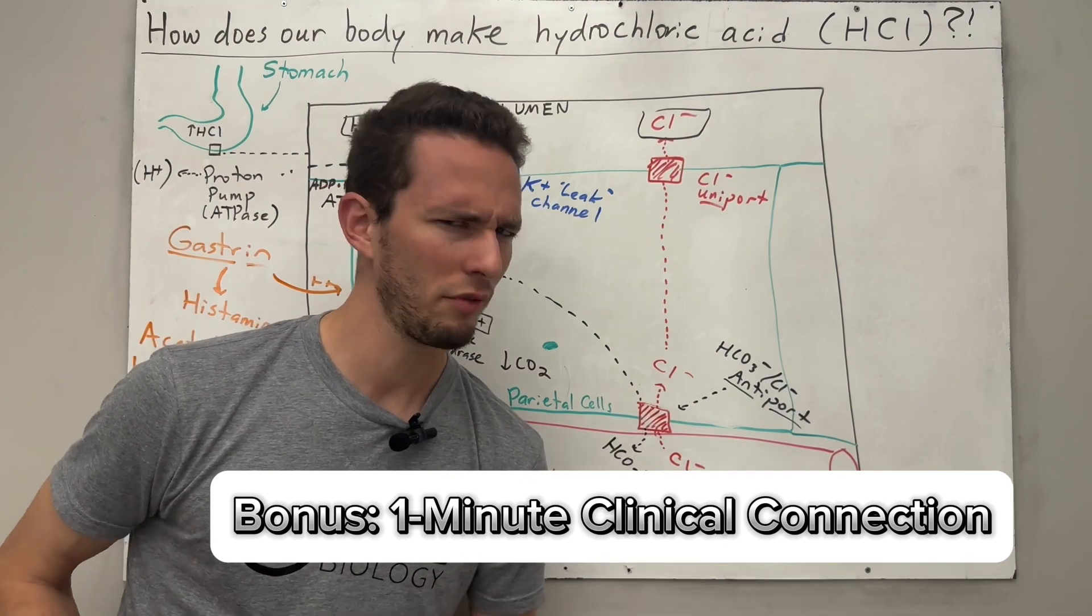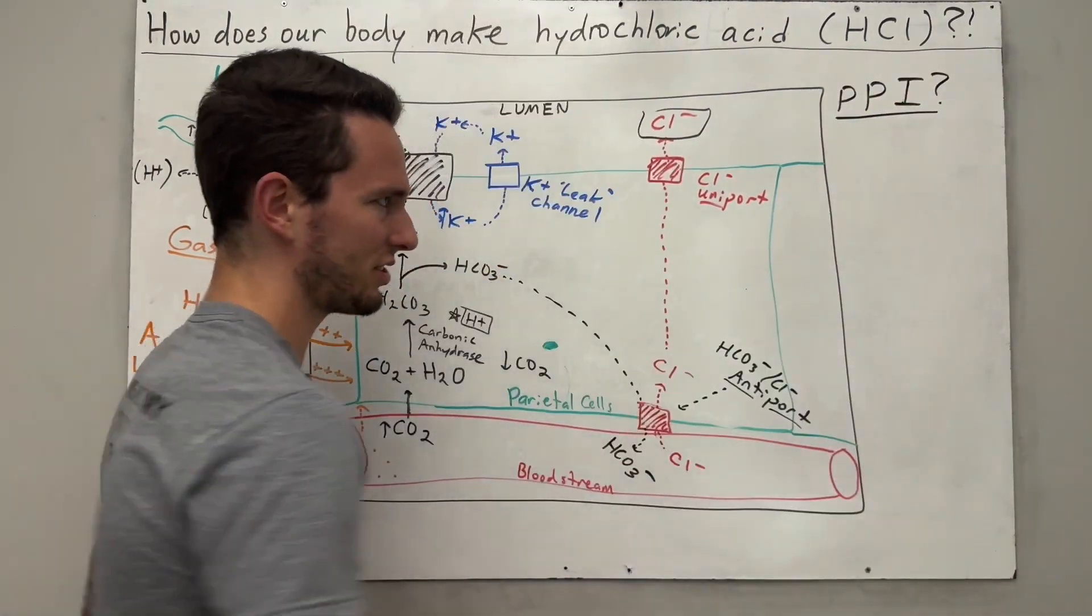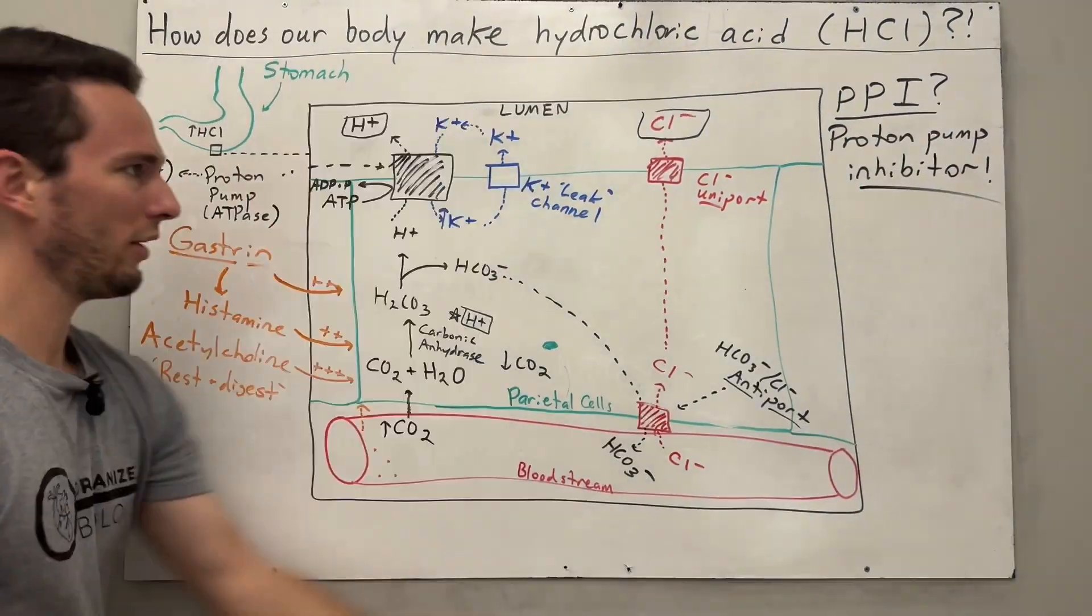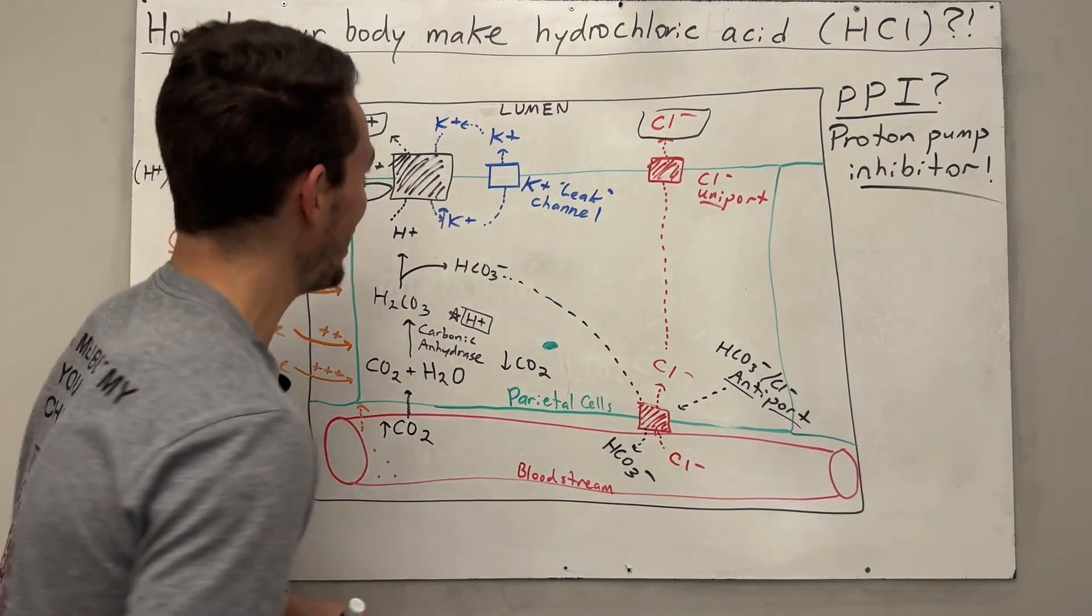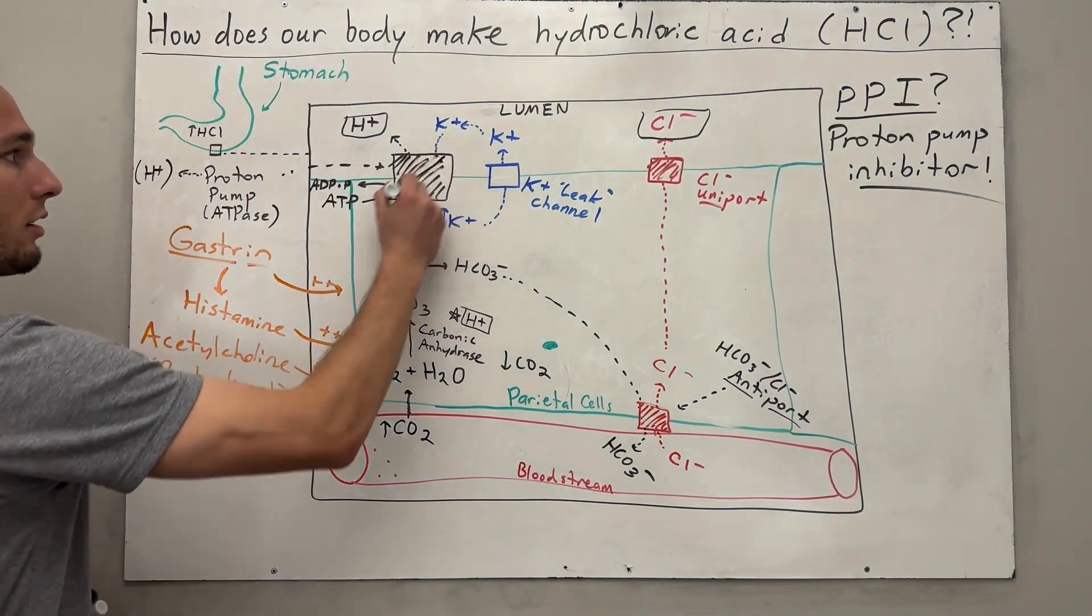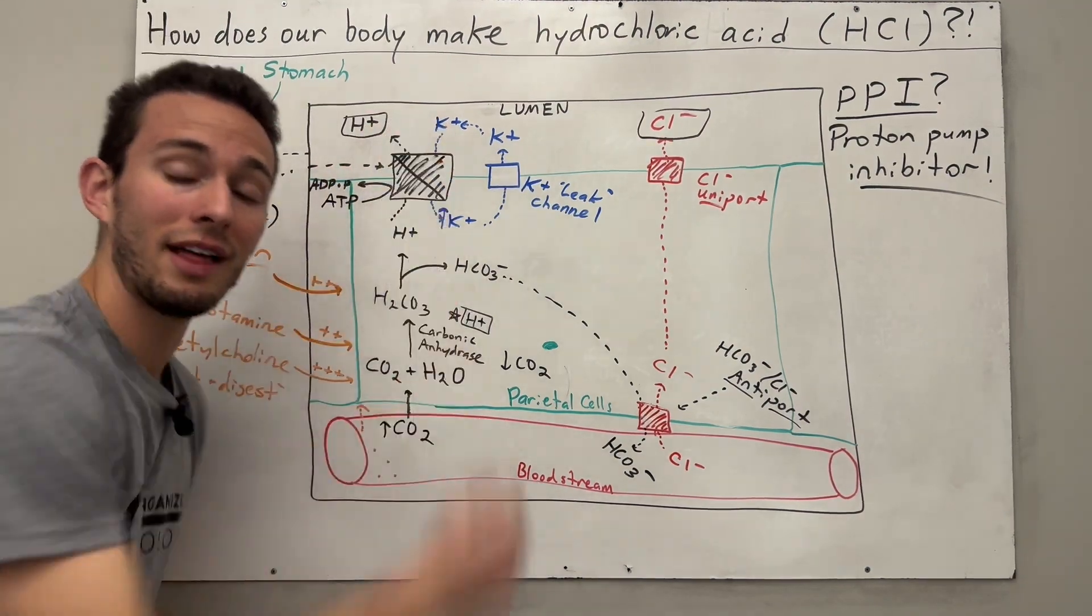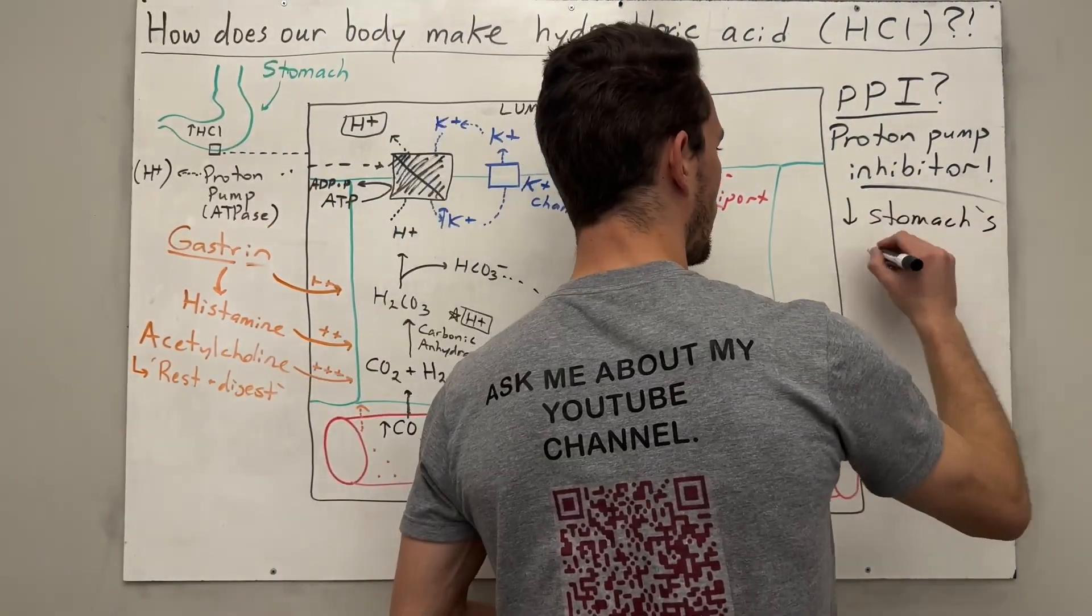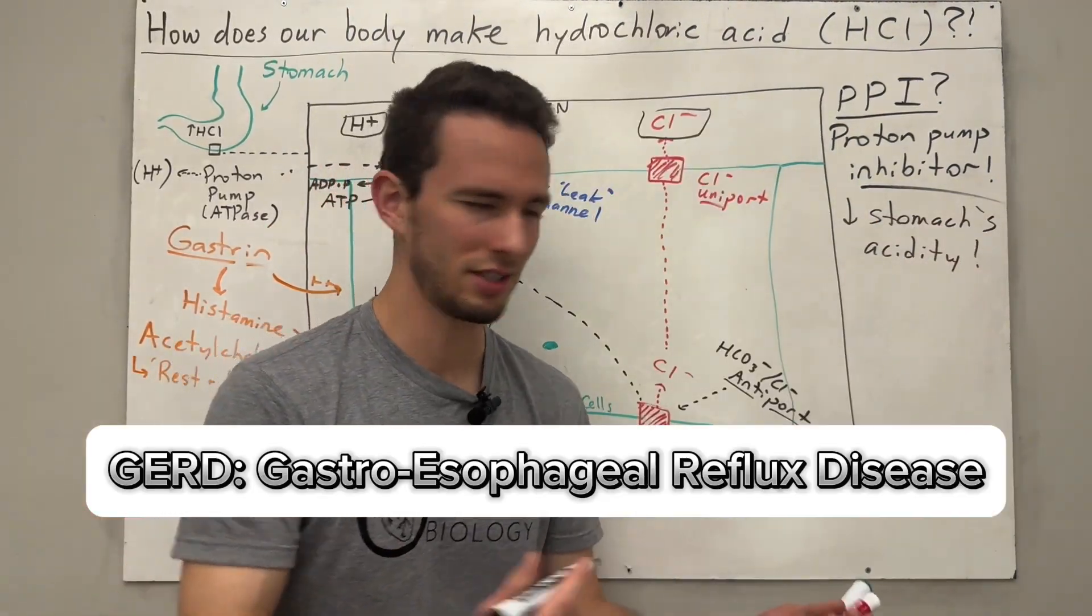A quick clinical connection before you go. Have you ever heard of what's called PPIs? PPI stands for proton pump inhibitor. Now y'all are smart. Where is that proton pump? Well, it's this guy right over here. So if we inhibit this proton pump from acting, that's going to prevent hydrogen ions from getting into the stomach. That actually will decrease your stomach's acidity.